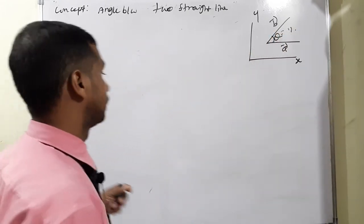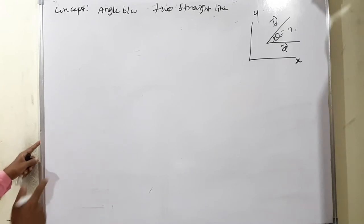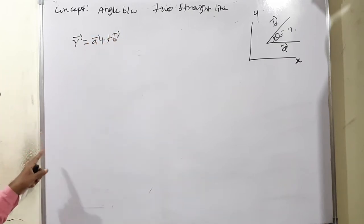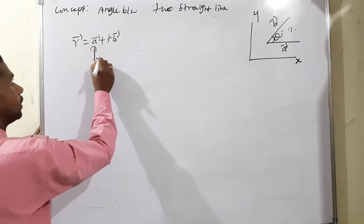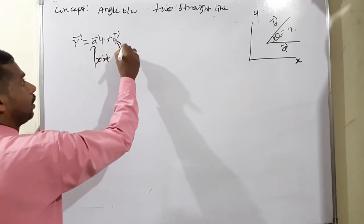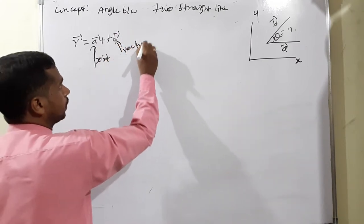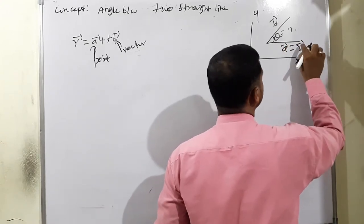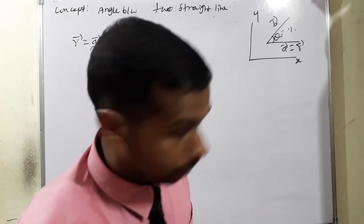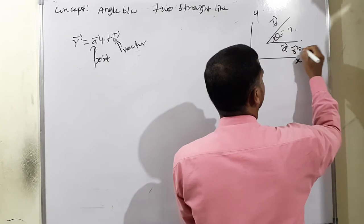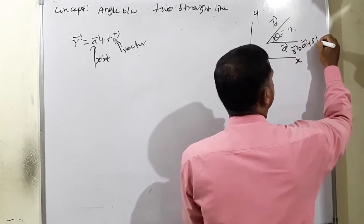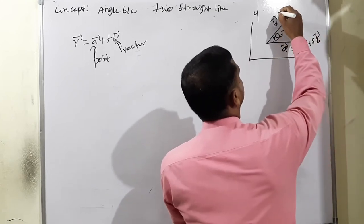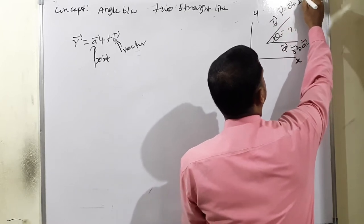A vector: already we discussed — one point and a parallel vector. The formula is R vector equals a vector plus some scalar multiplied by b vector. This is the point, and this is the direction vector. So for two lines: one is R equals a plus s·b, and the other is R equals c plus t·d.